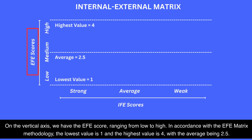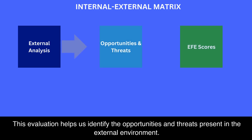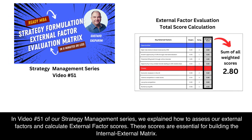On the vertical axis we have the EFE score, ranging from low to high. In accordance with the EFE matrix methodology, the lowest value is 1 and the highest value is 4, with the average being 2.5. The EFE score is derived from an external analysis that examines factors like market trends, customer preferences, industry competition, regulatory changes, and technological advancements, among others. This evaluation helps us identify the opportunities and threats present in the external environment. In video number 51 of our strategy management series, we explained how to assess external factors and calculate external factor scores, which are essential for building the internal-external matrix.